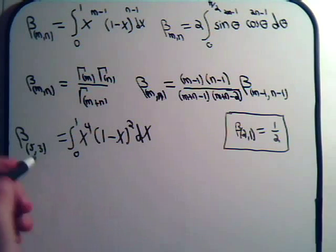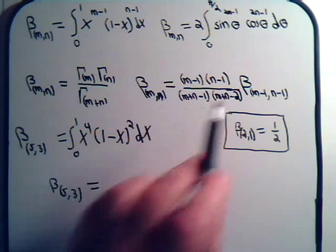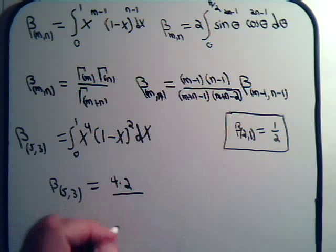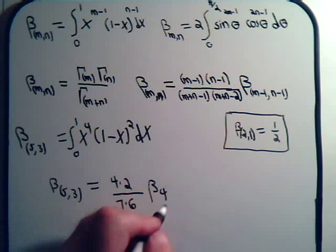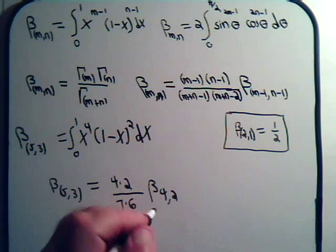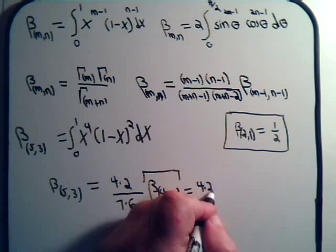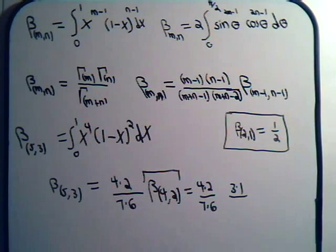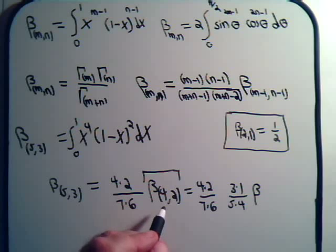Let's use the reduction formula. Beta(5,3) equals (m minus 1)(n minus 1) = 4 times 2, divided by (5 plus 3 minus 1)(5 plus 3 minus 2) = 7 times 6, times beta(4,2). Applying the reduction formula again: (4 minus 1)(2 minus 1) = 3 times 1, divided by (4 plus 2 minus 1)(4 plus 2 minus 2) = 5 times 4, times the beta function of 3, 1.